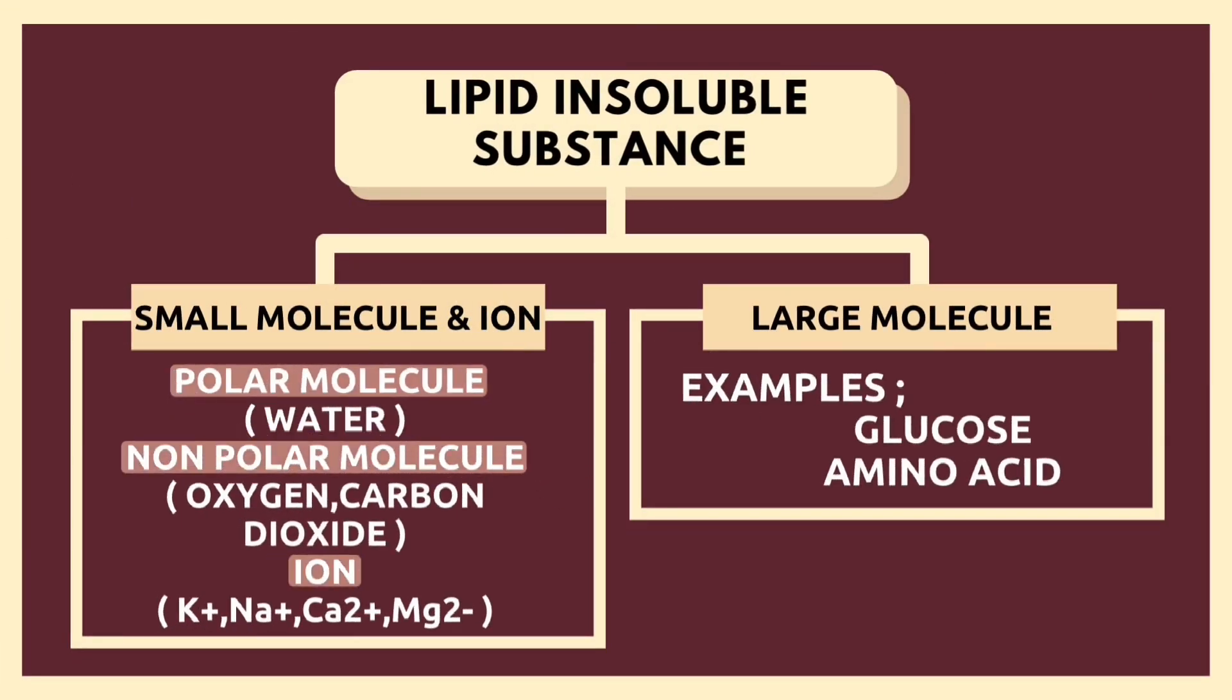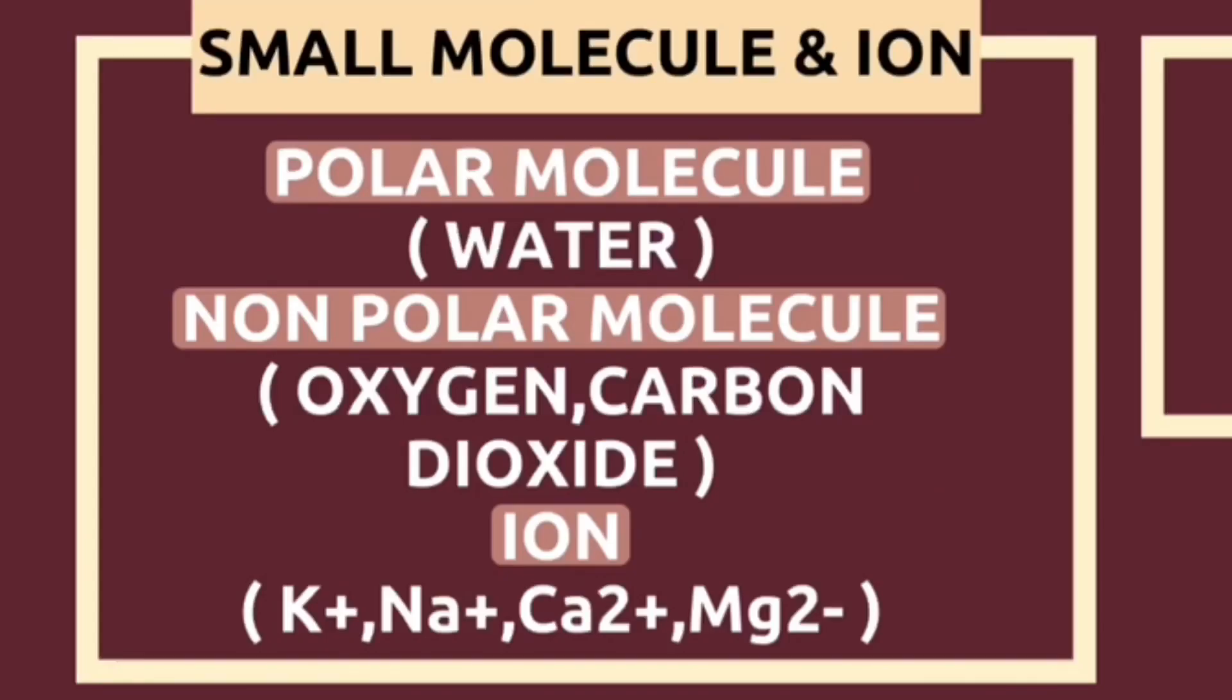Meanwhile, lipid-insoluble substances divides into two, which are small molecule and ion, and large molecule. Small molecule and ion consist of polar molecules, for example water, non-polar molecules like oxygen and carbon dioxide, and also ion, for example, potassium ion, sodium ion, calcium ion, and magnesium ion.